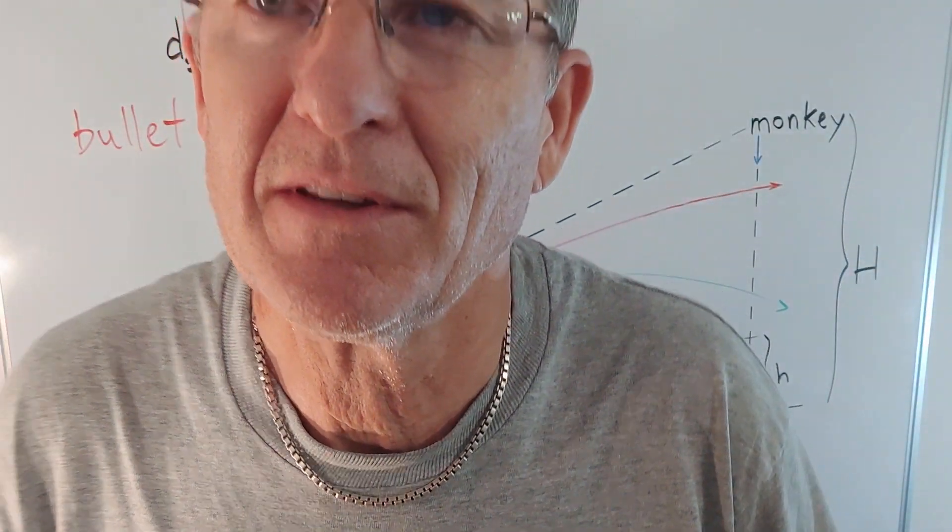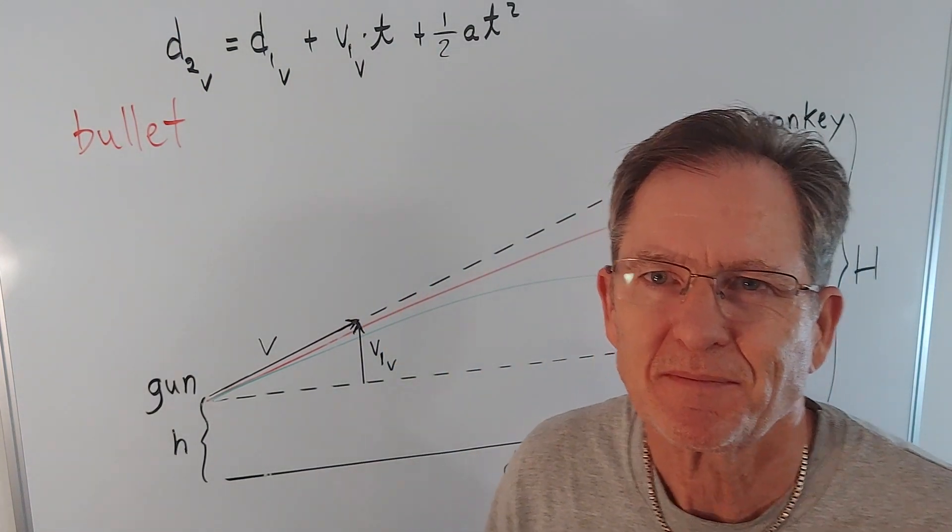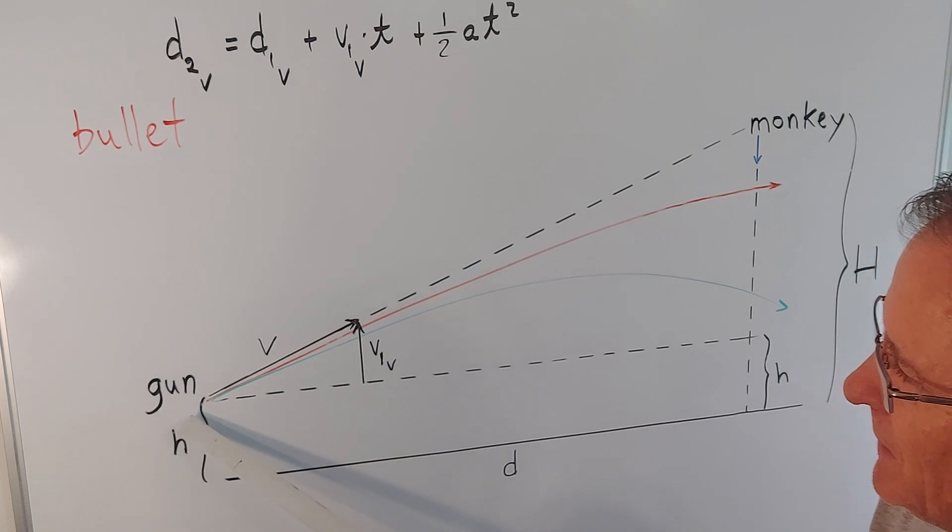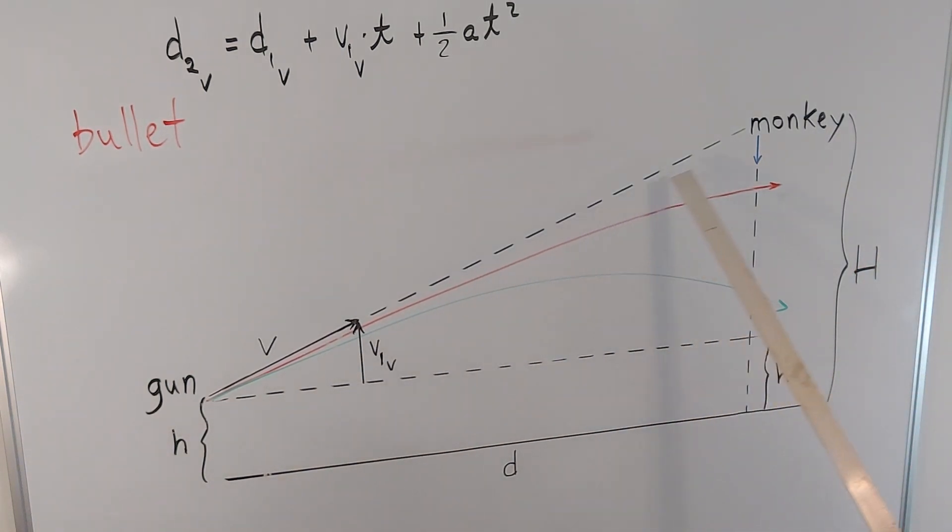Today I want to talk about the so-called monkey gun. Imagine a gun being aimed directly at a monkey hanging in a tree. When the gun is fired, the monkey anticipates the shot and lets go at exactly the same time, so he starts to fall.